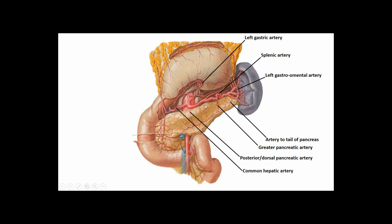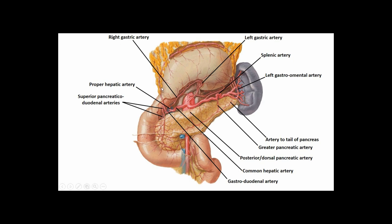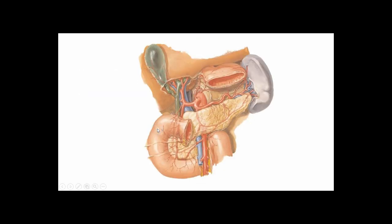Looking at branches of the common hepatic artery traveling right, it gives off the proper hepatic, the right gastric artery to the lesser curvature, and the short gastroduodenal artery giving off the right gastroomental artery. Pay attention to branches traveling on the anterior and posterior side of the head of the pancreas — these are the anterior superior and posterior superior pancreaticoduodenal arteries, traveling around the head of the pancreas and supplying branches to the duodenum as well.